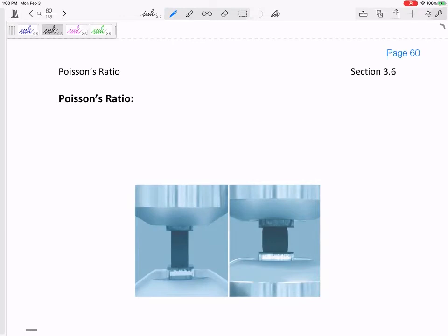Okay, Poisson's ratio. I think you already know this: if you stretch a material, its diameter decreases a little bit. If you compress a material, sometimes its diameter increases.